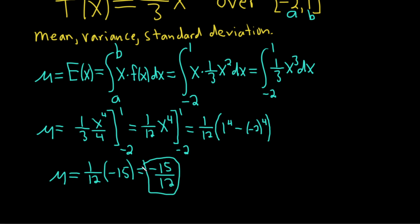We can simplify this. 3 goes into 15 five times, so it's negative 5 over 4. That will be our μ.